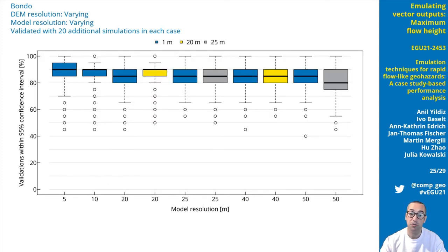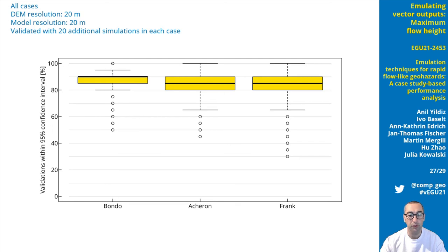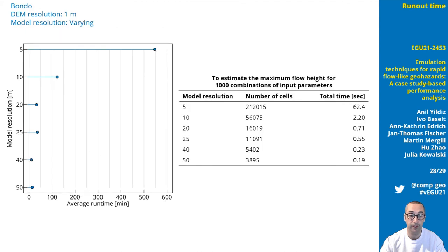We see that the majority of cells has high validation rates. The boxplot shows validations of maximum flow height for Bondo. Emulators built with simulations of 5 and 10 meter model resolutions have a median validation rate of 90%, whereas the rest is around 85%. The coarsest emulator has the lowest median validation rate. Comparing emulation performance for vector outputs from different case studies at the same DEM and model resolution, we see visually that estimation capacity is quite similar between cases, confirmed by the boxplot with median percentages of validations within 95% confidence interval around 85 to 90%.